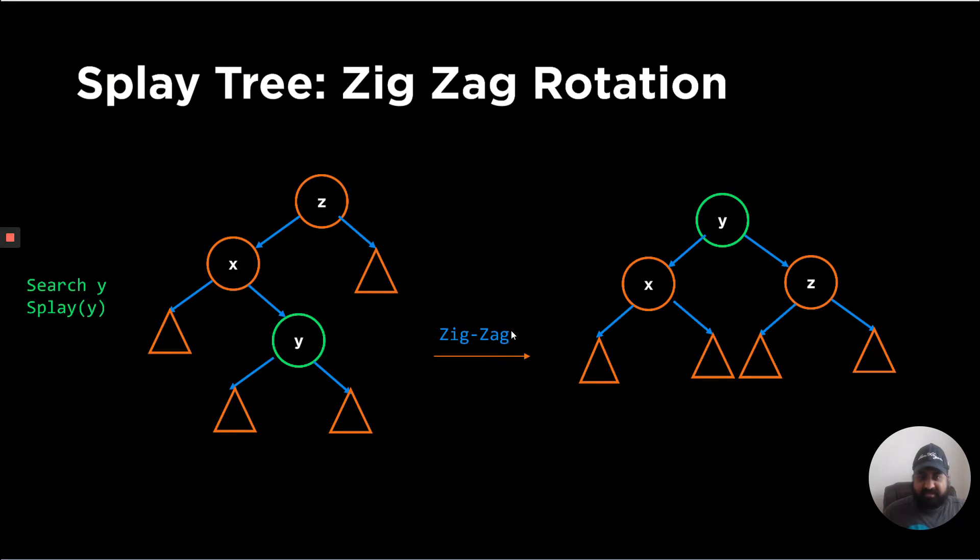The second operation is zigzig rotation. So if you have a pattern like this and if you are trying to search the value Y, now Y should become the root node. So you can fix that by making Y as the new root and X as its left subchild and Z as its right subchild.